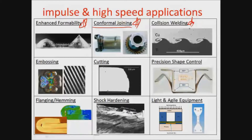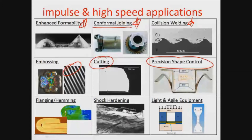Collision welding: if you get things to move together at very high speeds, you can actually cause the two materials to jet off their initial surfaces and form very interesting microstructures that allow you to join very dissimilar metals without causing any intermetallic formation or brittle phases. We can also develop really high pressures to emboss one surface into the other and develop very minute features. We can use that to do cutting processes, precision shape control — causing high-strength material to exactly form a net shape — and develop very light systems for flanging and hemming. Shock hardening is also possible, and the equipment to do this is very light and agile.